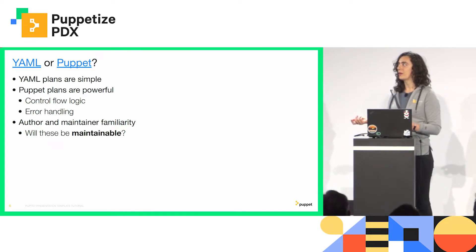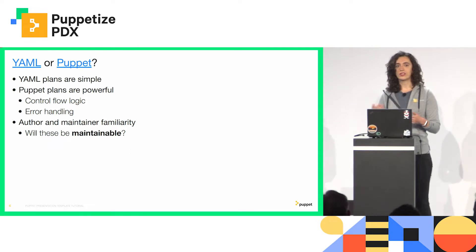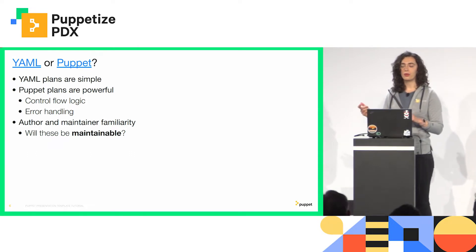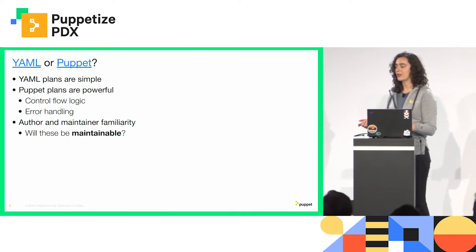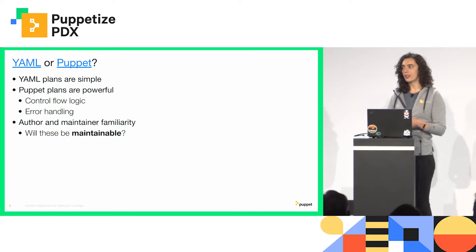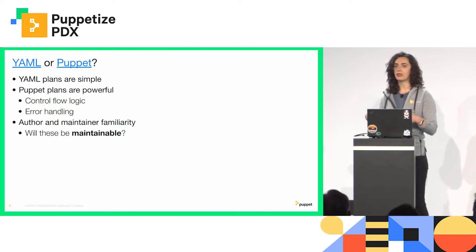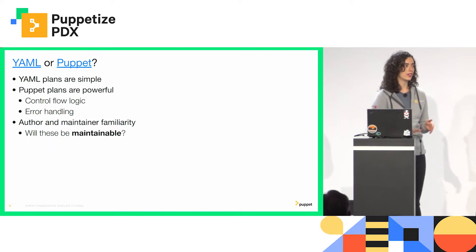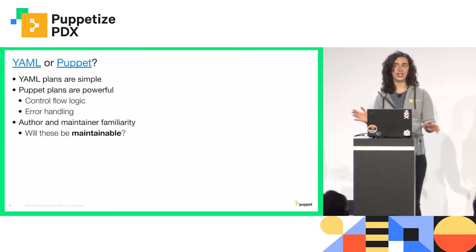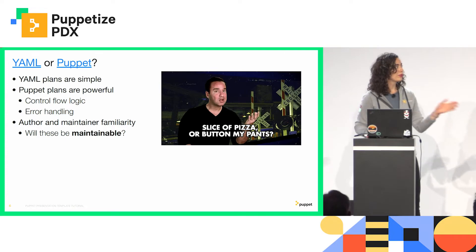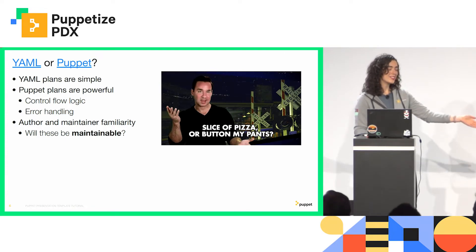One really common workflow is to start writing your plan in YAML, and then once you need to add more complexity than YAML allows, we have a command line command — bolt plan convert — which will convert a plan from YAML to Puppet. Then you can add in error handling, branching, whatever complexity you need. That's a pretty easy way to get the best of both worlds. Both are great options — just do what works for you.